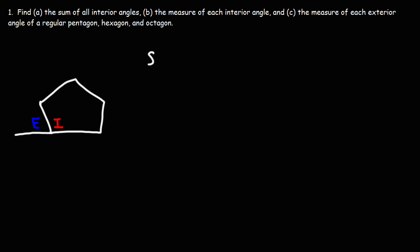To calculate the sum of the interior angles, it's simply 180 times n minus 2, where n is the number of sides on the polygon.